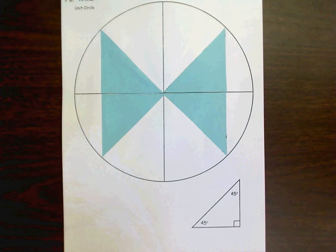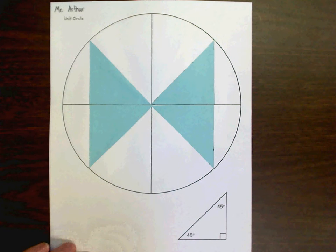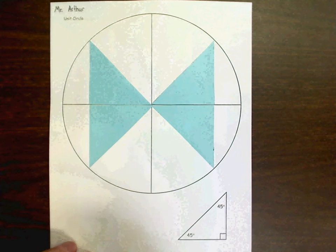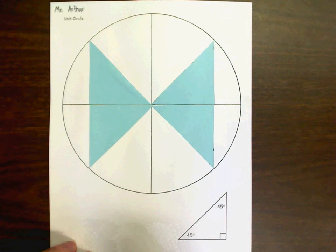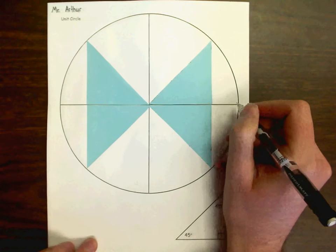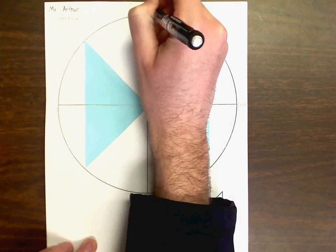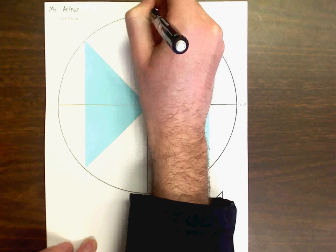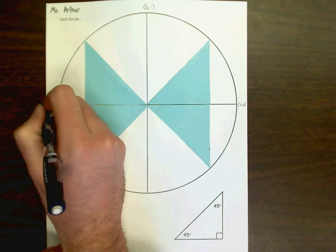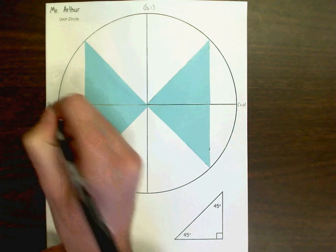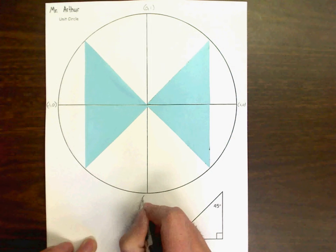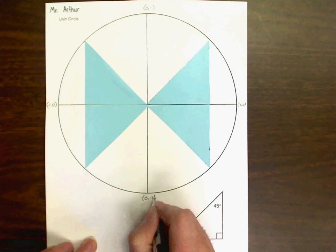If you're feeling ambitious and would like to add a few other things, you can start by just writing the coordinates of our unit circle. Just the four major ones. So, since this is a unit, it is one unit long. So, this point over here is at one comma zero. This point up here is at zero comma one. Over here, we have negative one comma zero. And, down here, we have zero comma negative one. And, you can do the same thing on the other side.